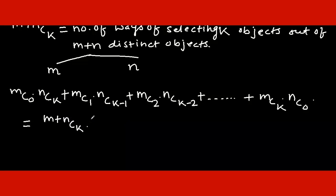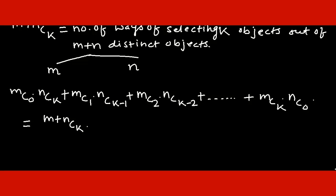So this whole expression is equal to m+nCk. This is the analytical proof of Vandermonde's theorem. This is a very important theorem and you can apply it in many ways.